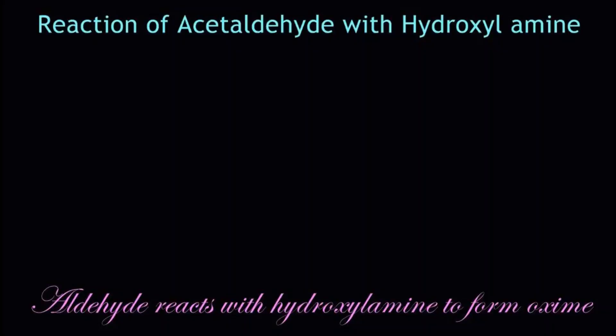In this video we are going to learn the reaction of acetaldehyde with hydroxylamine — that is, we are going to prepare an oxime. Let's write the structure of acetaldehyde first: CH3CH double bond O. This is acetaldehyde. We are going to react it with hydroxylamine.